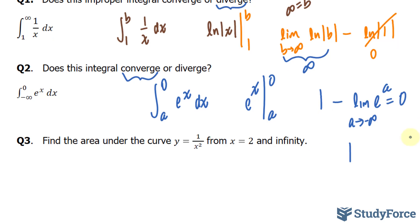Finally, in question 3, they want us to find the area under the curve for the function y is equal to 1 over x to the power of 2 from x is equal to 2 to infinity. This is an improper integral because our upper bound is infinity. And the equation is 1 over x to the power of 2 with respect to x.